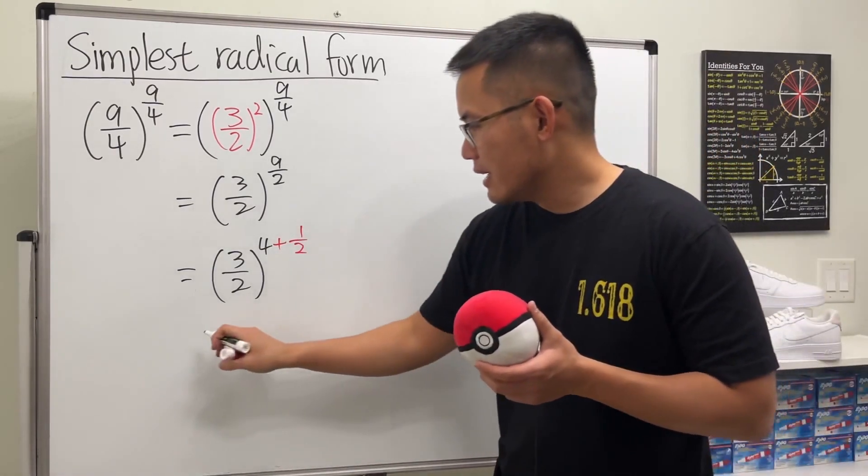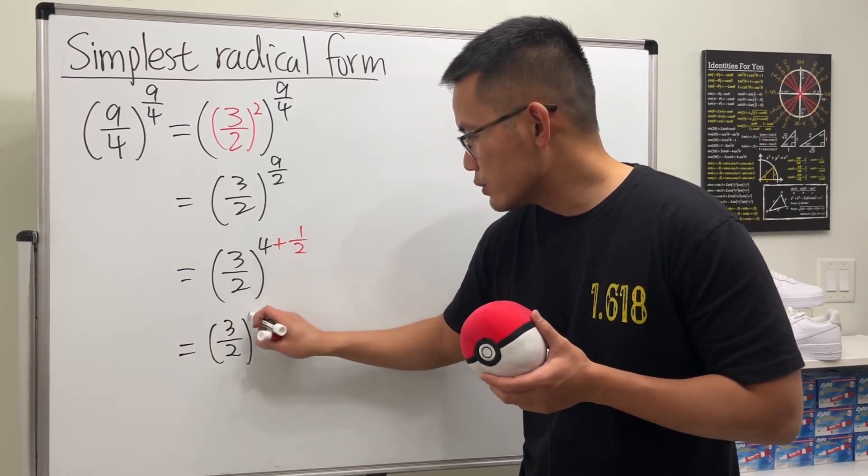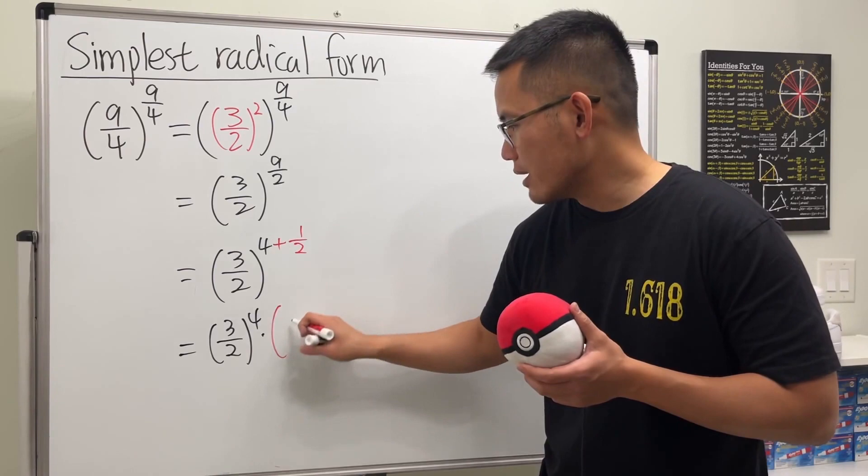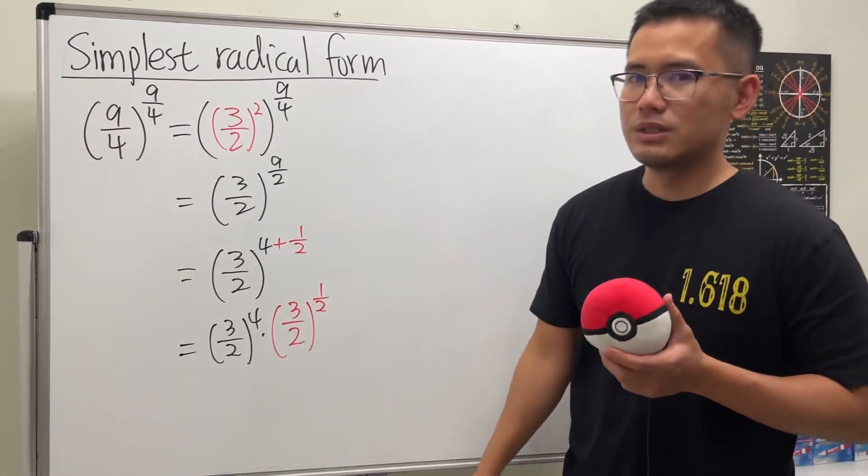And the reason I want to write it like this is because now I can break this apart as 3 over 2 raised to the 4th power times 3 over 2 to the 1 half power, thanks to the rule of exponents.